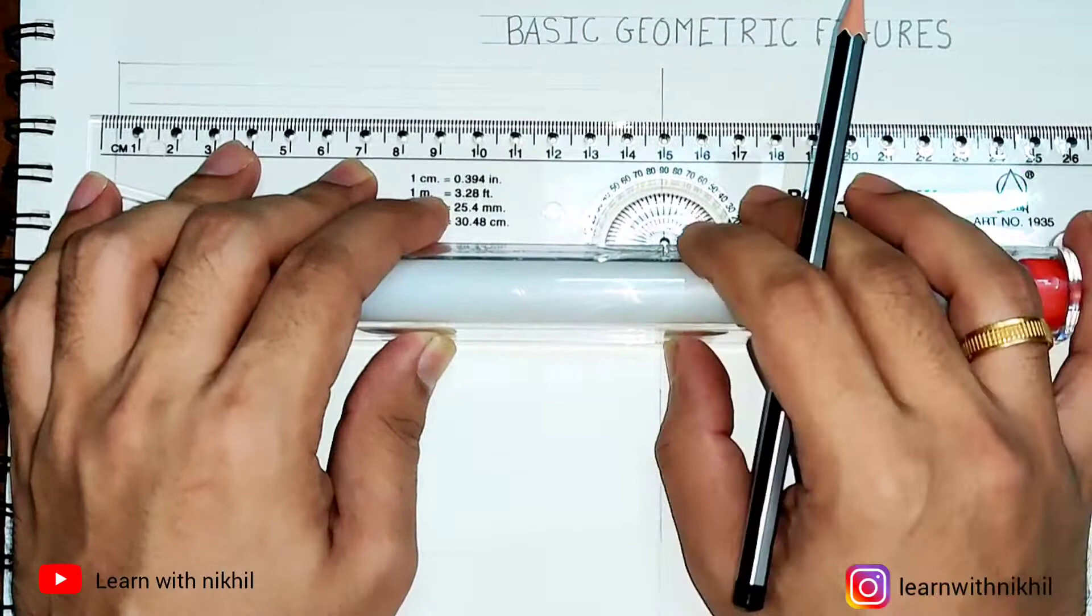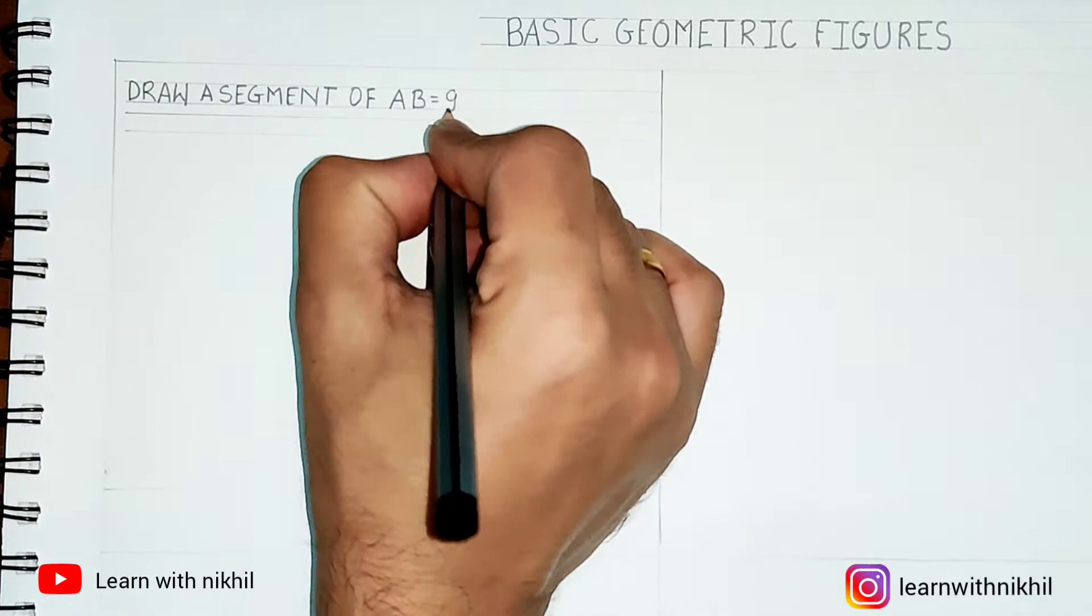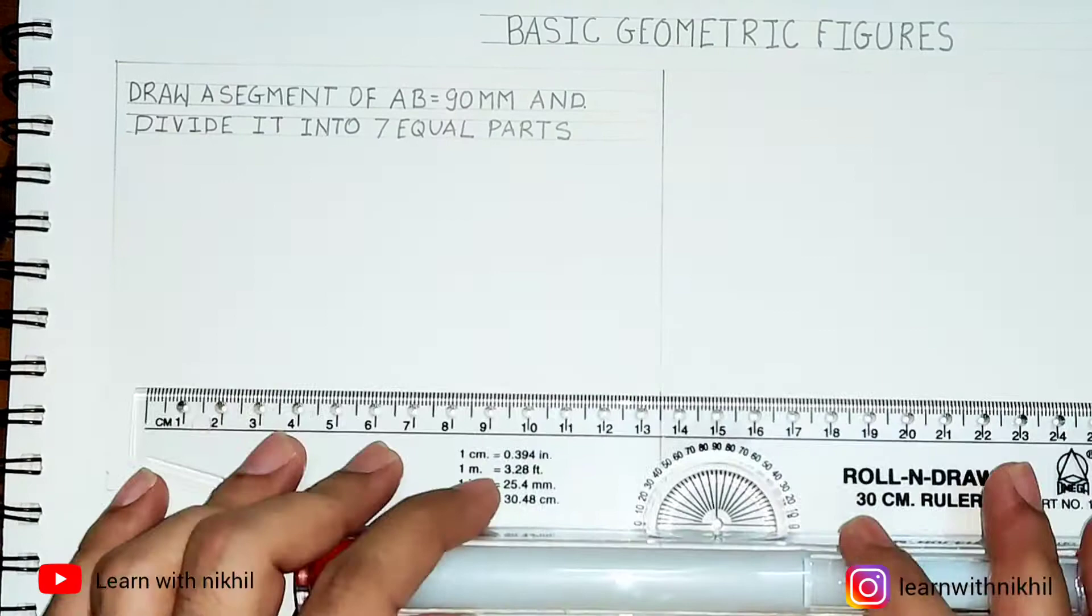In this session, I'll show you four geometric figures. We have divided the page. First one is: draw a segment AB of 90 millimeters and divide it into seven equal parts.